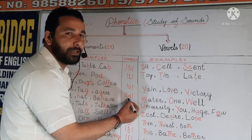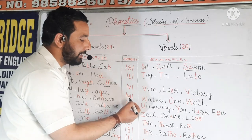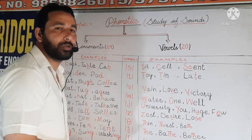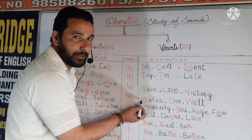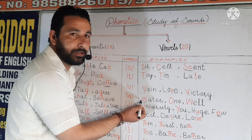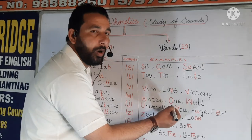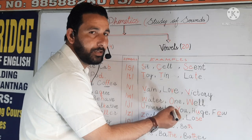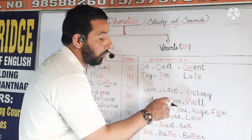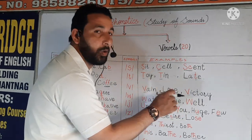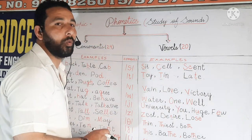Next symbol is W. It looks like W but has the sound W. For example, we have 'water' — we start with the sound W. Next is 'one' — we start with the sound W. And in example 'well', we again start with the W sound.